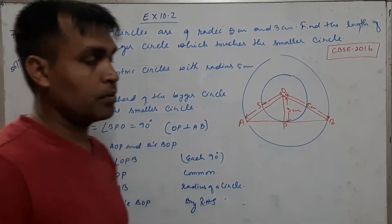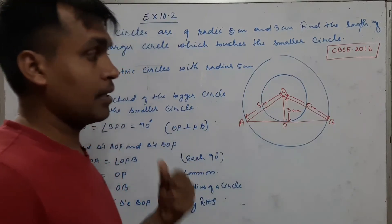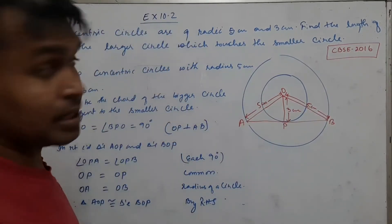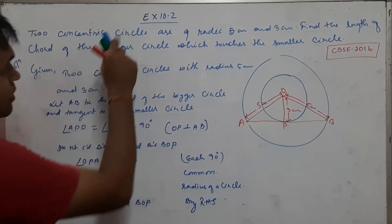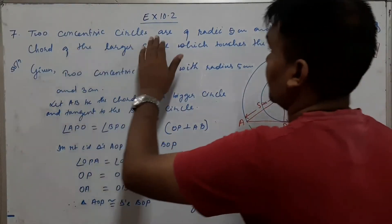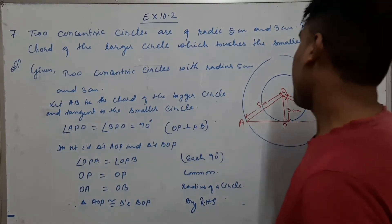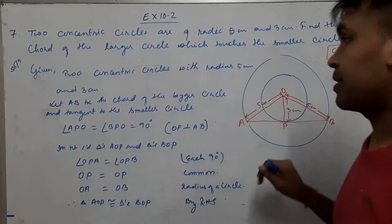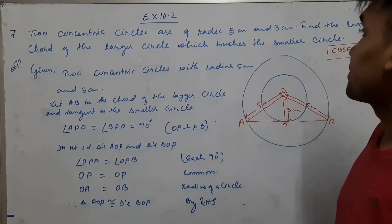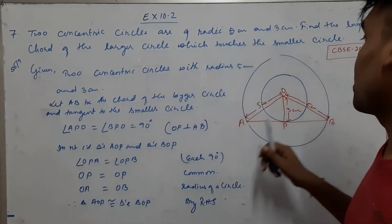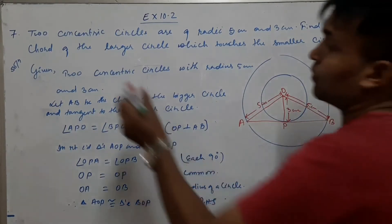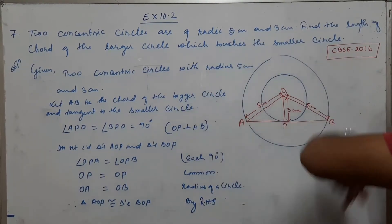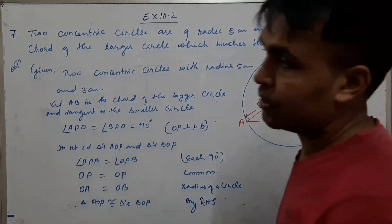Question number seven. Don't be scared by the diagram — I know it looks scary because it's not a complete circle. Please try to draw the circles properly with a compass. The question says: two concentric circles have radii of five centimeters and three centimeters. Find the length of the chord of the larger circle which touches the smaller circle.